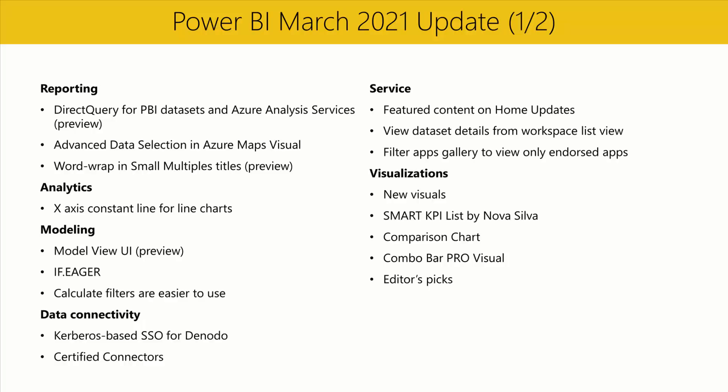Next, continuing our work on the small multiples preview feature, we've added word wrap to small multiple titles. Now you can ensure your longer titles aren't truncated if they run beyond the width of the small multiple column. Keep in mind that we will allocate space for the longest category name across all your small multiples to ensure the plot areas align properly. As a result, if some small multiple titles are much longer than others, turning on word wrap may leave extra white space under the shorter titles.